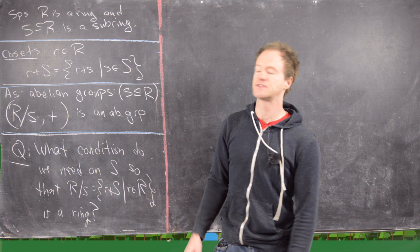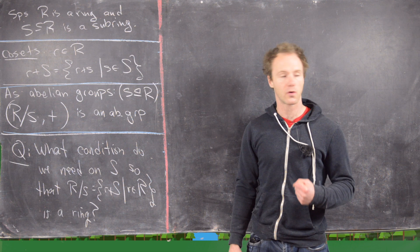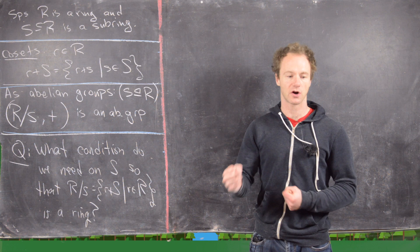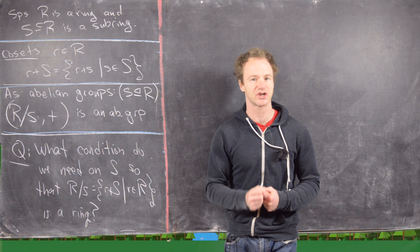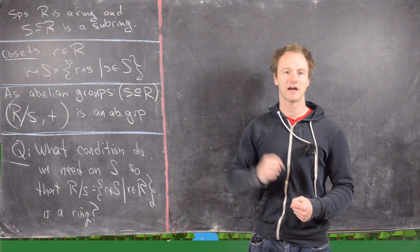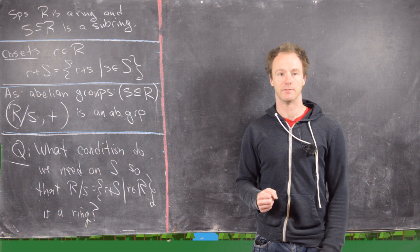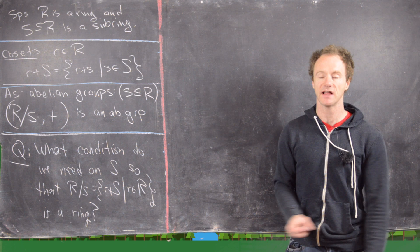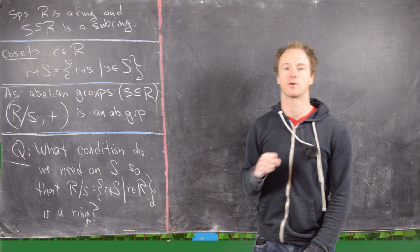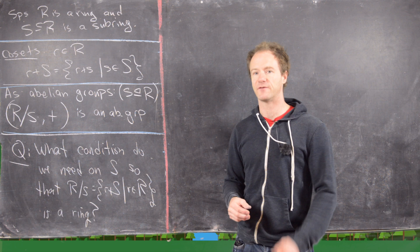An important distinction from groups: within groups your cosets are always determined by whatever your group operation is — sometimes addition, sometimes multiplication, sometimes composition of functions, sometimes multiplication of matrices. But with a ring, your cosets are always determined by the addition component. You don't worry about the multiplication when defining the cosets. As you'll see later, the multiplication will be really important, but not for the definition of the cosets. So cosets for a ring always look like r plus S: an element from the ring (the representative) plus the subring.